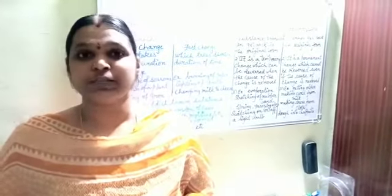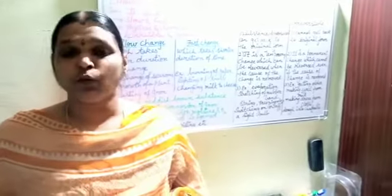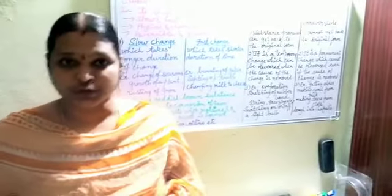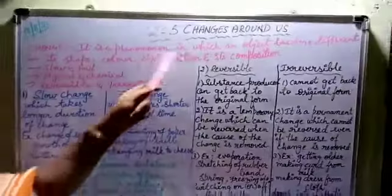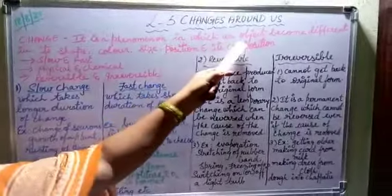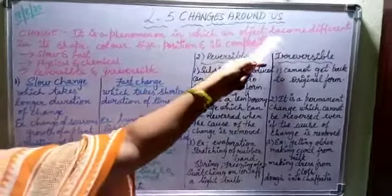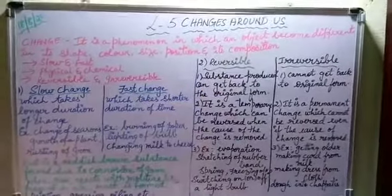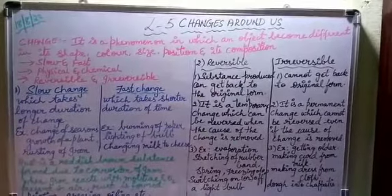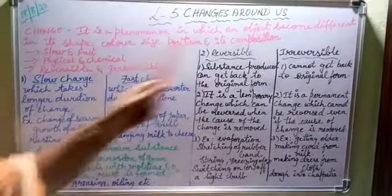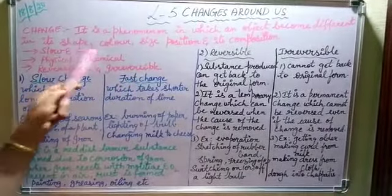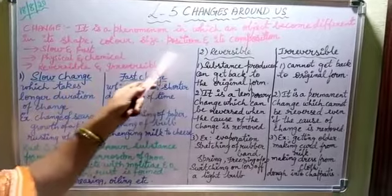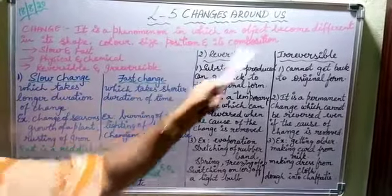Our next lesson is 'Changes Around Us.' What is a change? Change is a phenomenon — a process in which an object becomes different in its shape, color, size, position, and composition.